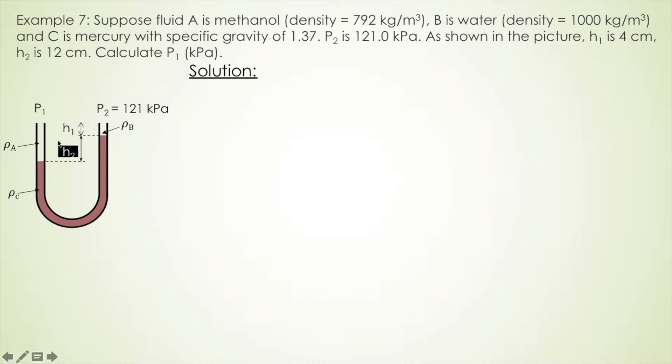Suppose liquid A is methanol, and liquid B is water, C is mercury with specific gravity of 1.37, P2 is 121 kilopascal as shown in the picture, and given H1, this little part is 4 cm, and H2 is 12 cm. So we need to calculate P1 in kilopascal.